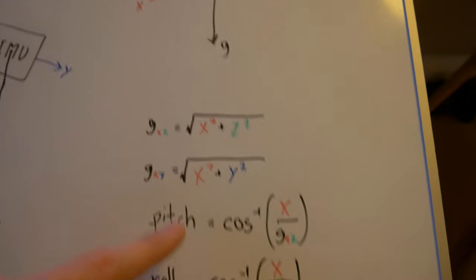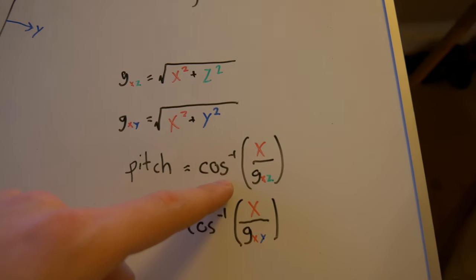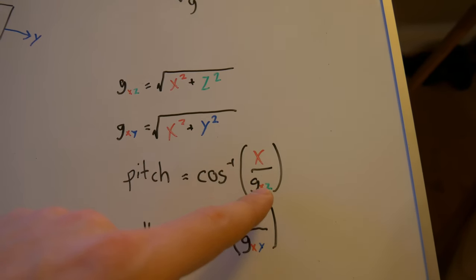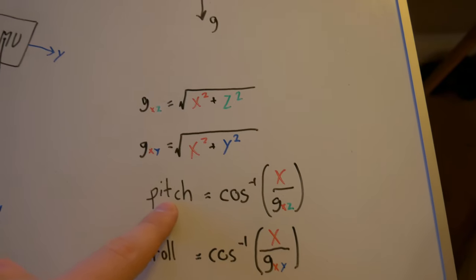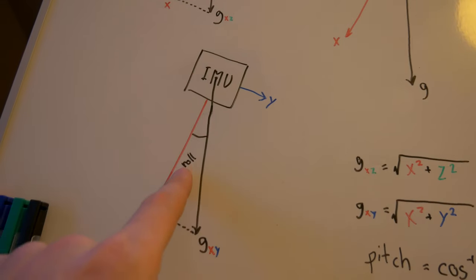To get the pitch angle, we basically use the inverse cosine and we can calculate the pitch angle. The same thing goes for the roll angle.